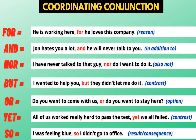Now these are a few conjunctions — for, and, nor, but, or, yet, so. 'For' is used when there is a reason behind something: 'He is working here for he loves this company.' 'And' is used to join two similar words or similar types of sentences — for example, 'John hates you a lot and he will never talk to you.' So we have used the word 'and' here.